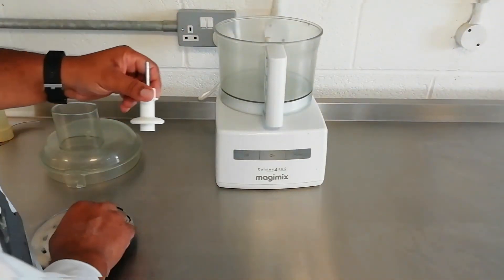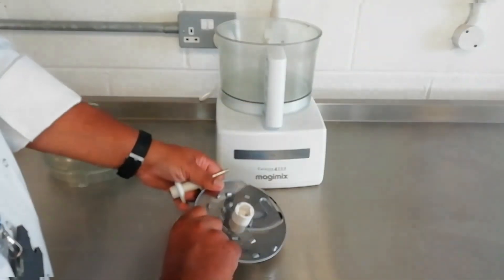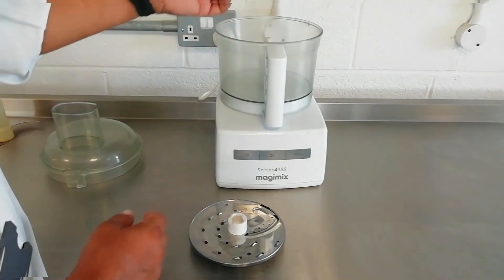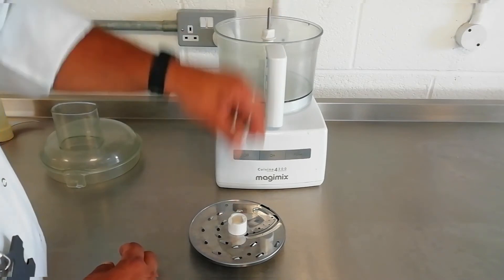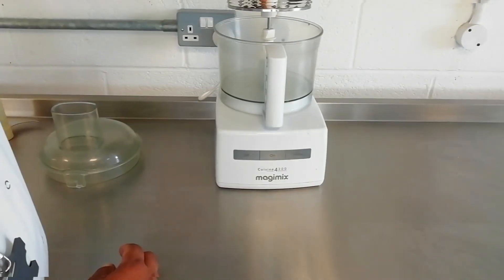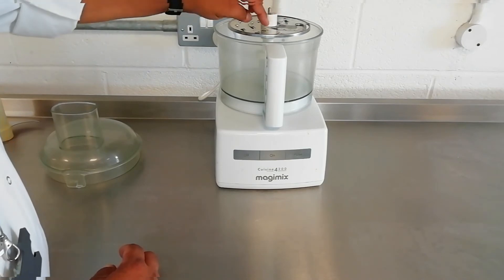And next I'm going to use the grater and the slicing blade. So slightly different. We put this little spindle in first. And then we pop this in. Okay and it just clips in. So this will do the grater.